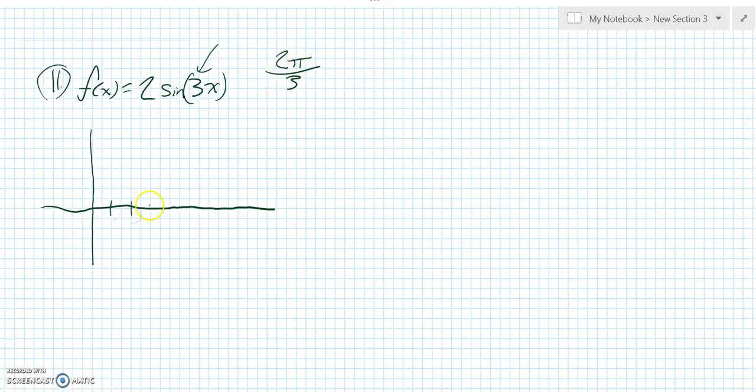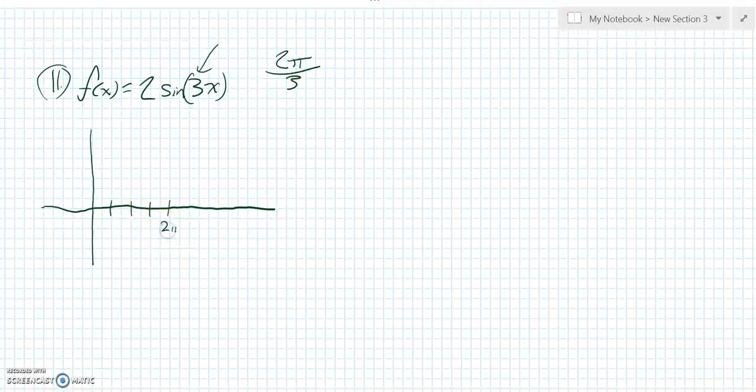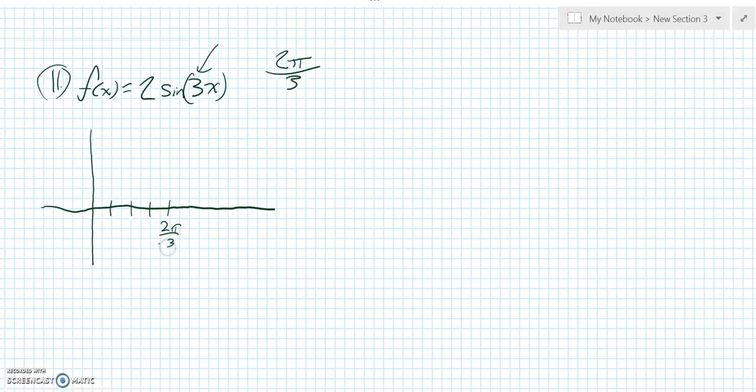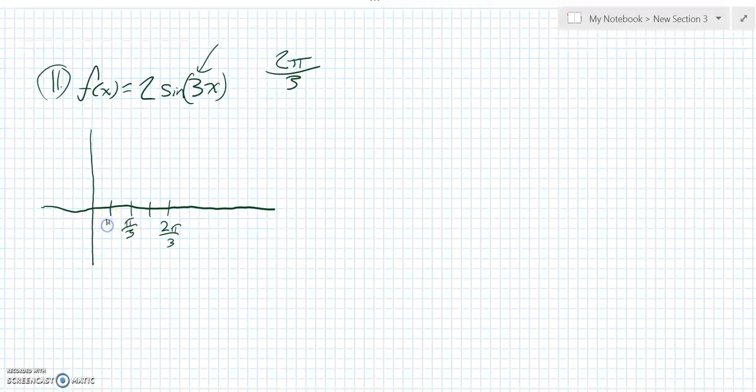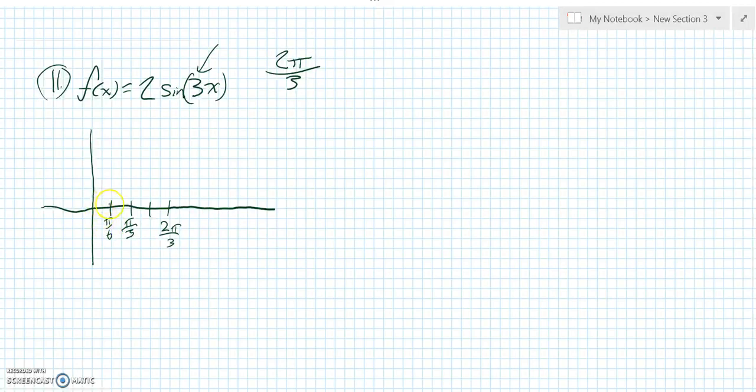So let me make some hash marks on here. 1, 2, 3, 4. And I know that this right here would be 2 pi over 3. Doing the rest of these, half of 2 pi over 3 is pi over 3. Half of pi over 3 is pi over 6. 1 pi over 6. 2 pi over 6. Notice that 2 pi over 6 is pi over 3.